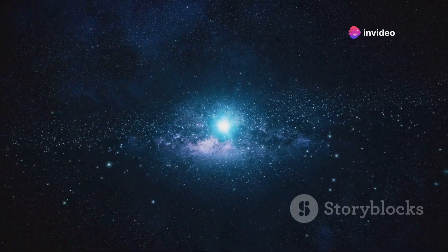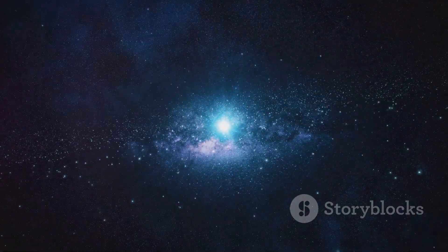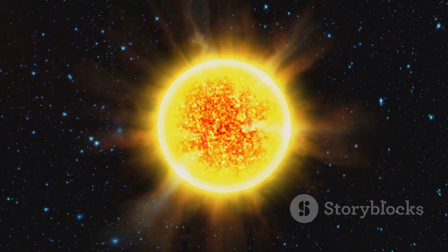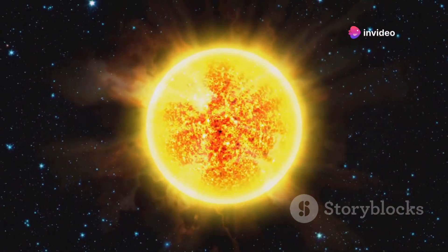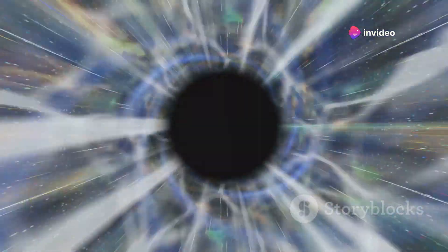However, stars have a finite lifespan. They are born, they live, and eventually they die. The life cycle of a star depends on its mass, with more massive stars having shorter lifespans. As a star runs out of fuel, the outward pressure from nuclear fusion weakens. The star can no longer support itself against the relentless pull of gravity. Gravity takes over, causing the star's core to collapse rapidly.